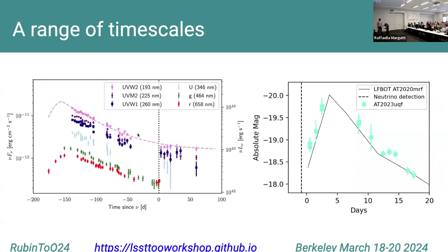These are two real candidate neutrino sources identified by ZTF: on the left a tidal disruption event, on the right an interacting supernova with an extremely rapid LFBot-like light curve that rose to peak within four days. This shows the wide variety: some neutrino sources are very slow transients and some very rapid — a GRB afterglow might disappear within two days. When designing a survey strategy, we must be agnostic and sample a range of potential timescales. When doing a TOO, you want to be sensitive to all these different types.